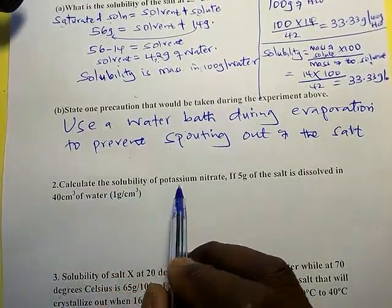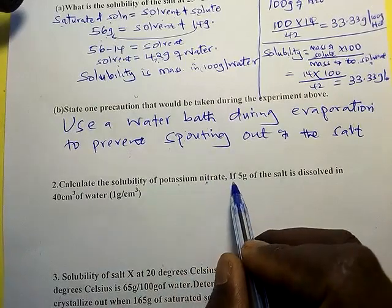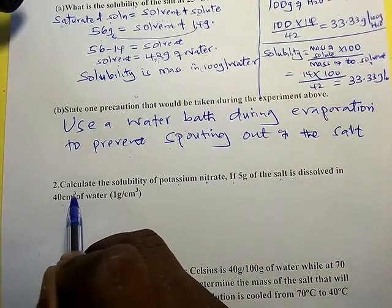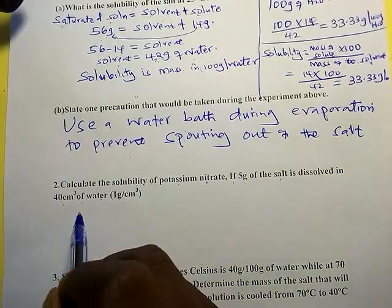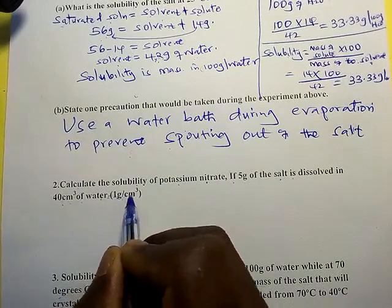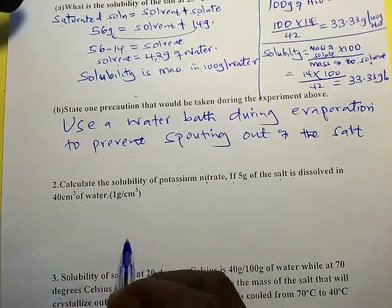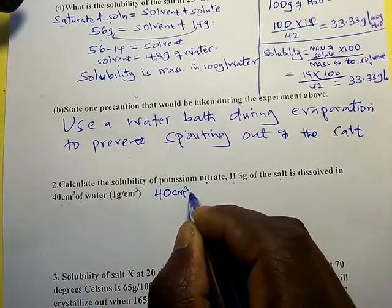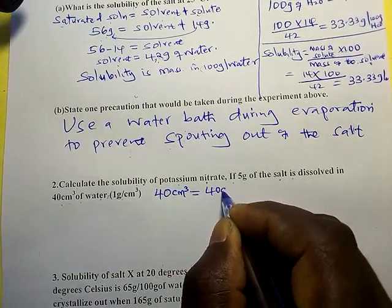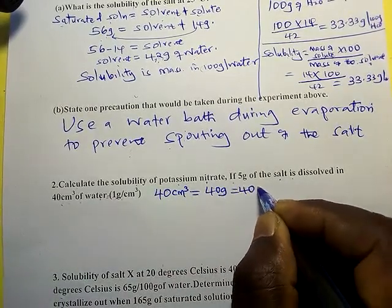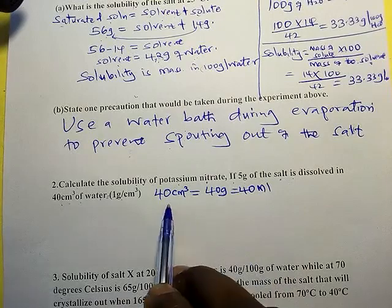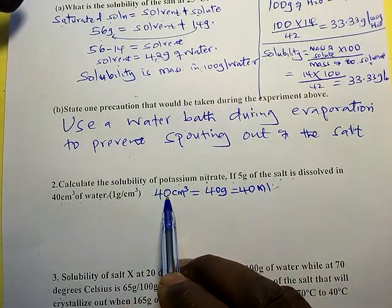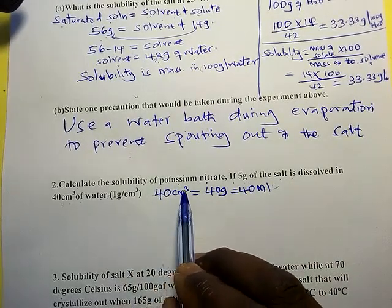Question 2: Calculate the solubility of potassium nitrate if 5 grams of the salt is dissolved in 40 centimeters cubed of water. The density of water is 1 gram per centimeter cubed. You should know that 40 cm³ of water is the same as 40 grams of water, the same as 40 ml of water.